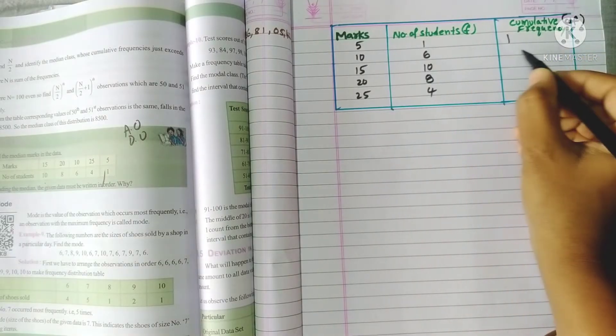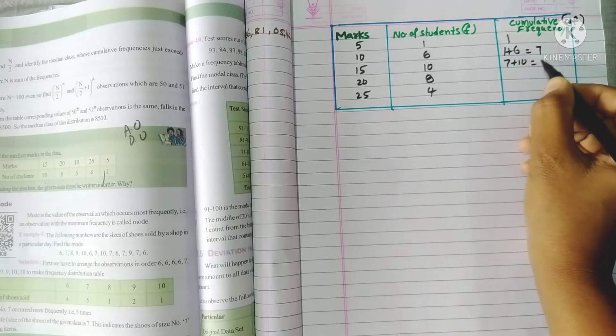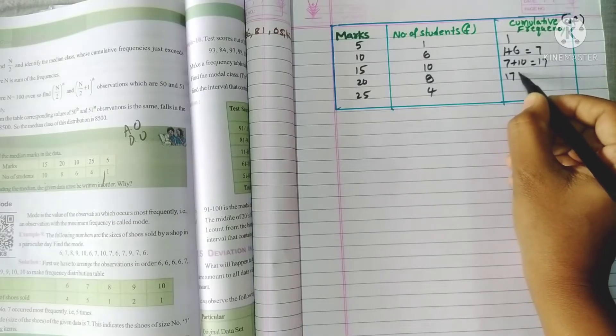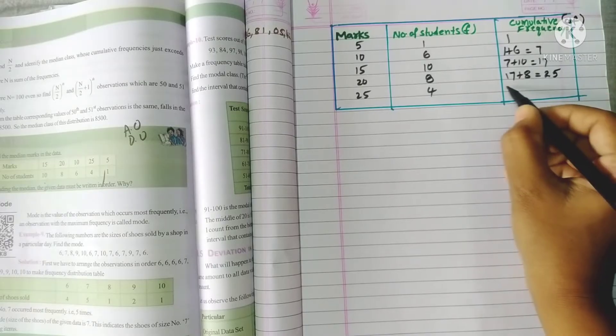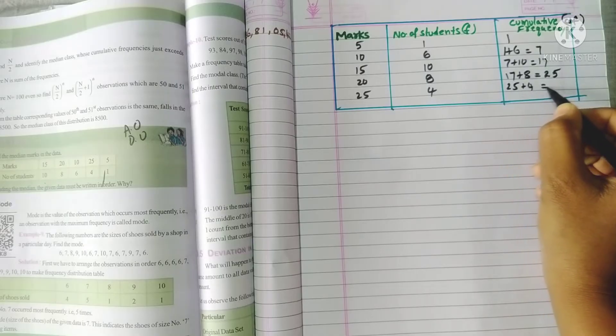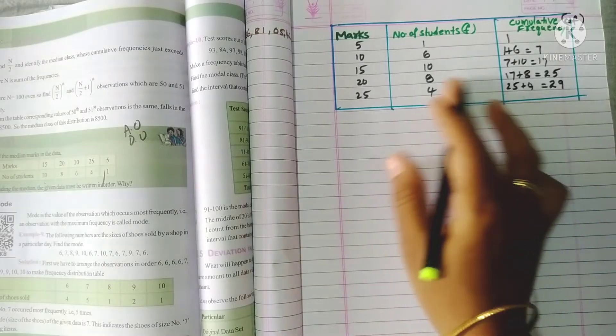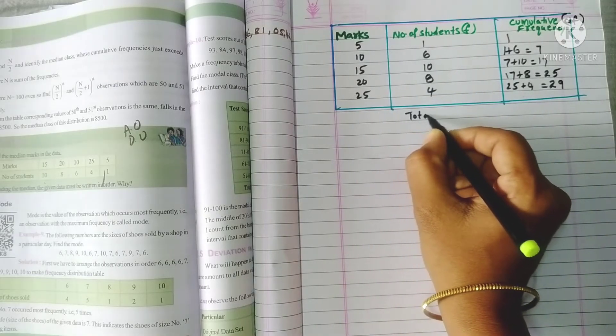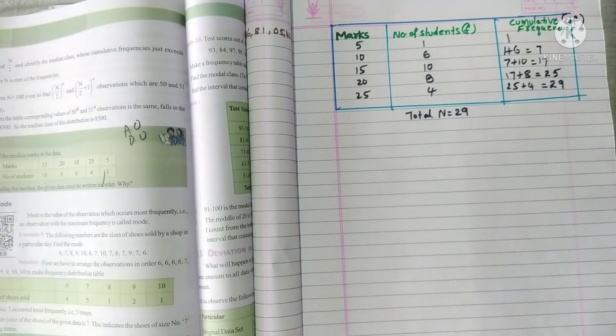So here, 1 only. 1 plus 6 equals 7. Now this 7 plus 10 equals 17. And 17 plus 8 equals 25. 25 plus 4 equals 29. So here, what is the total value? 29 only. Total n equals to 29. Now we want to calculate n by 2.